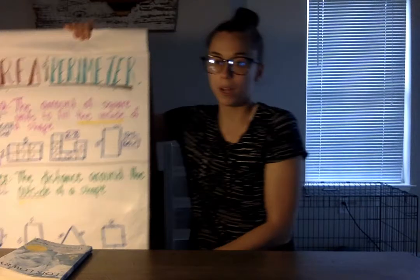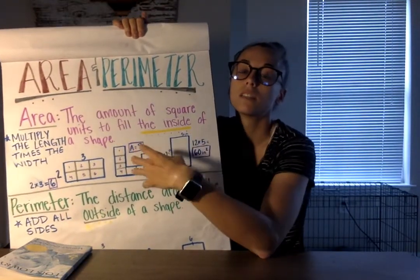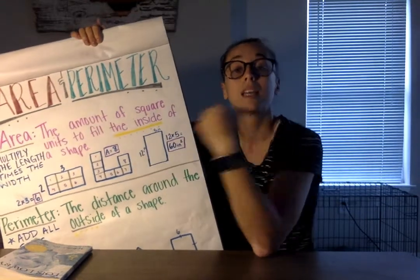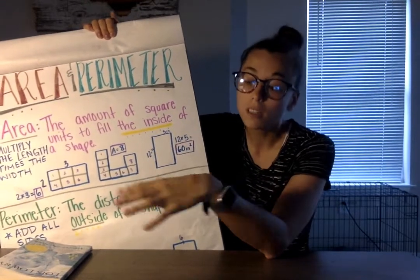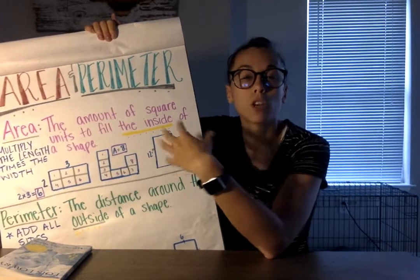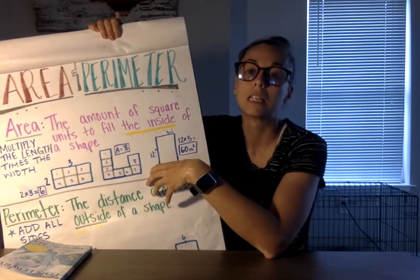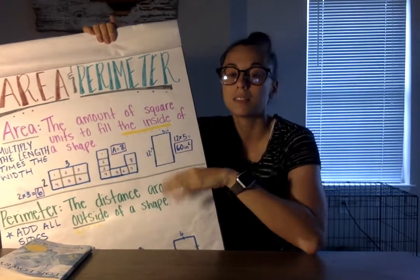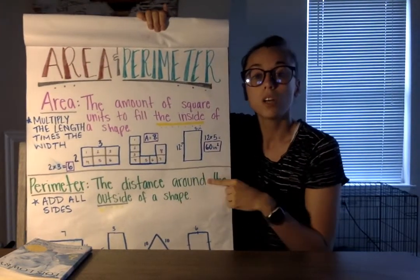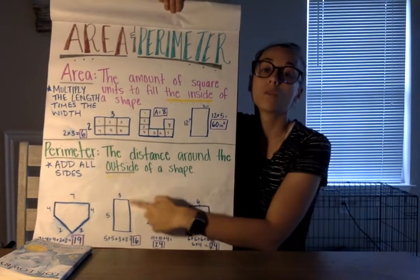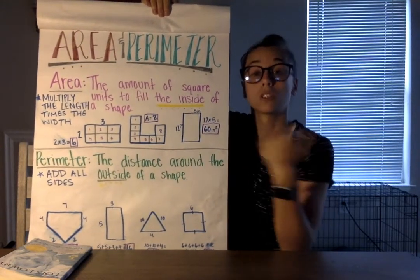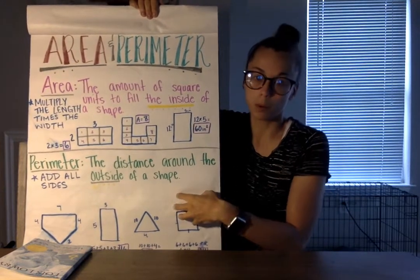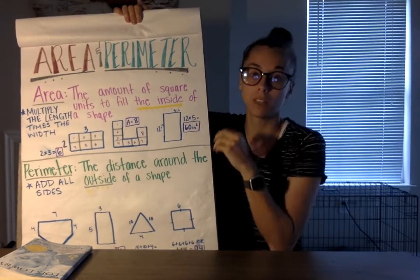Just to give you a recap: area is the amount of square units inside of a shape. Yesterday we talked about John and his garden and figuring out the space he needed to plant his plants — that's area because it deals with the inside. Then we have perimeter, which is the distance around a shape. With John's garden, the fence problem was perimeter because it's around the outside, nothing to do with the inside.